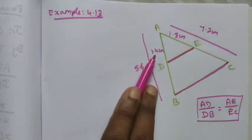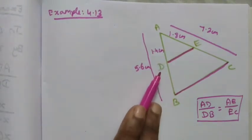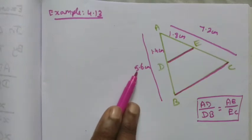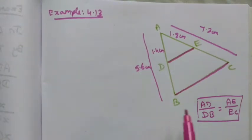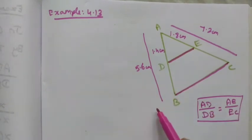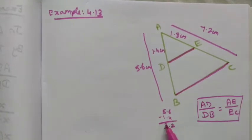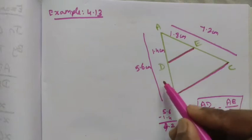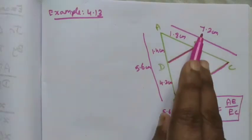AD is given as 1.4 centimetres. Now, what is DB? DB means the total AB is 5.6, and in 5.6 we subtract 1.4. The remaining value is DB.